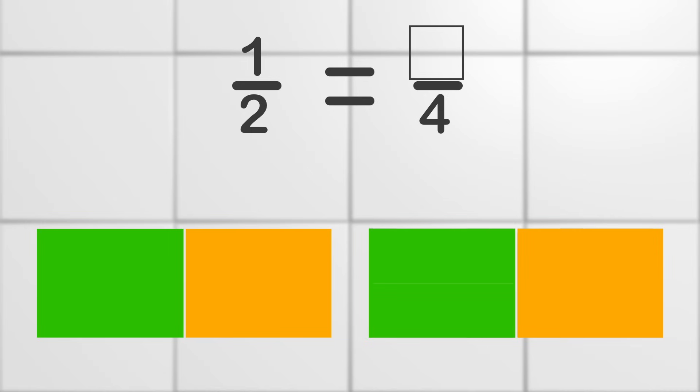We now have four parts. To find the numerator, all we need to do is count the green parts of the rectangle. How many are there? We have two green parts of the rectangle, so the fraction is 1/2 equals 2/4. Great job. By using a drawing, we figured out how to find a missing number in equivalent fractions. You guys rock.